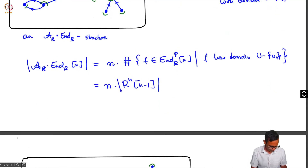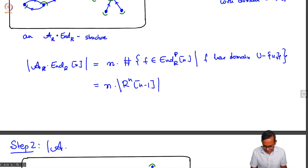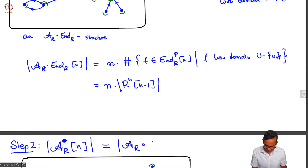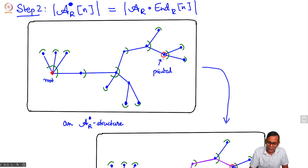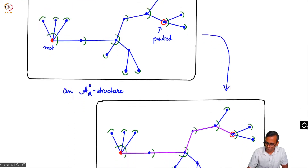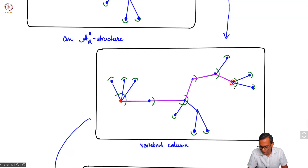Now Step 2: I will prove that the number of pointed R-enriched tree structures on n — that is, |A_R·[n]| — equals |A_R · EndR[n]|. We have an A_R· structure on a set: the red point is the root and there is a second distinguished point from the pointing. As we studied vertebrates earlier, we can think of this as an R-enriched vertebrate. Let me mark out the vertebral column joining the root to the pointed point.